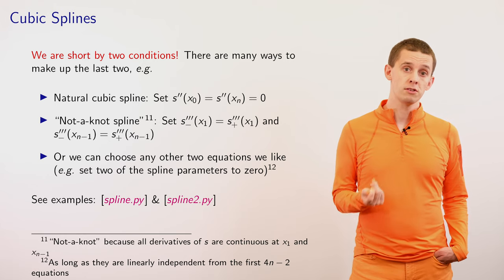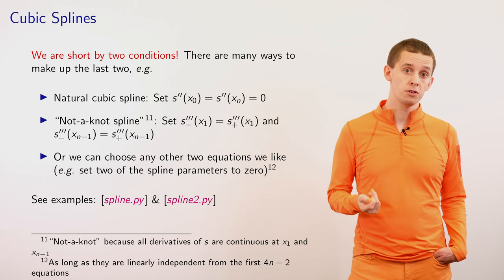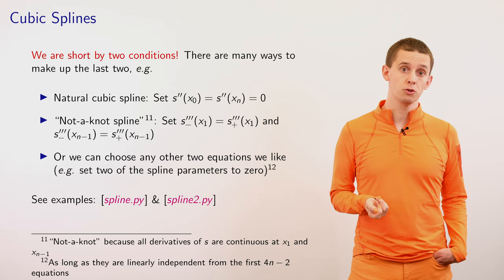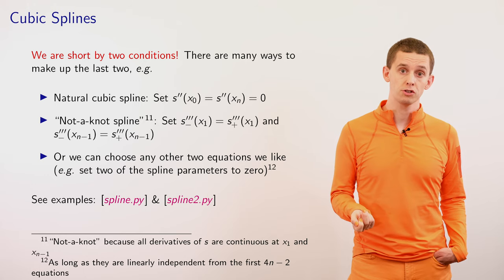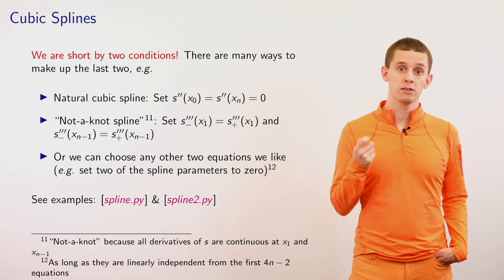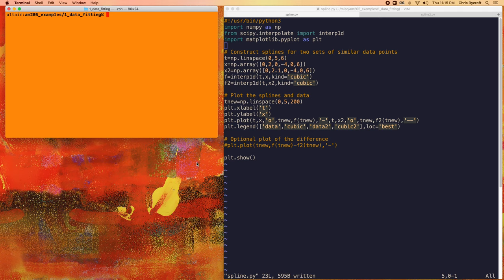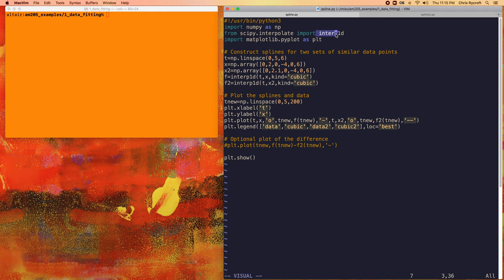We'll now look at a few examples. Many libraries have functions that can compute splines and also have different ways to specify these additional conditions. We'll look at two examples: spline.py and spline2.py. In the first example, spline.py, we're going to demonstrate the interp1d function from the scipy.interpolate module.